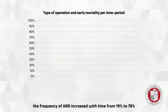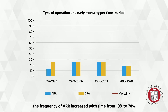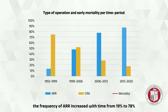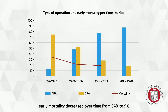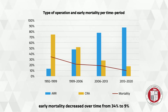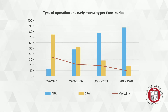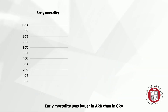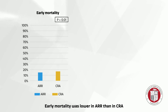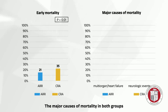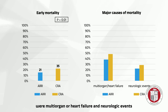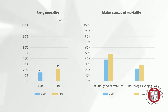Among all patients, the frequency of ARR increased with time from 19 percent to 78 percent. But despite this aggressive use of ARR, early mortality decreased over time from 34 percent to nine percent. Early mortality was lower in ARR than in CRA. The major causes of mortality in both groups were multi-organ or heart failure and neurologic events.